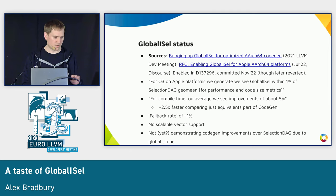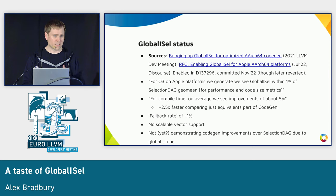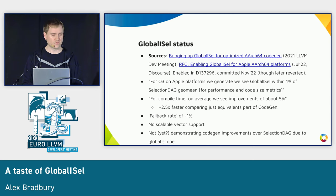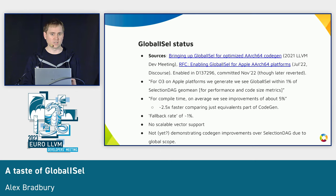Due to Amdahl's law, when you map that to a full compilation pipeline, it's a much smaller percentage — more like 5%. There is also an ability to fall back to Selection DAG if you can't compile a function using Global ISel. There isn't currently any scalable vector support within Global ISel, so that remains a gap. And although there may be some codegen improvements due to the global scope, Global ISel is not currently generating better code in general than Selection DAG.